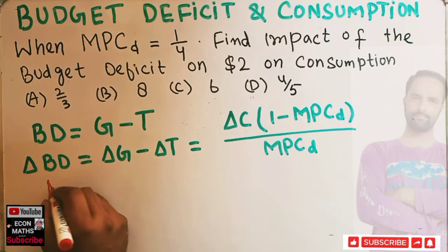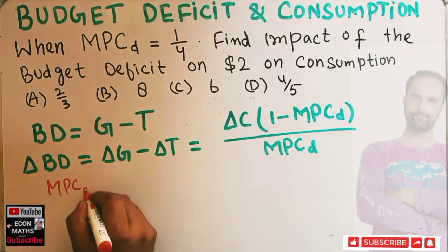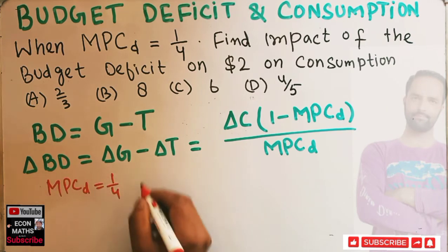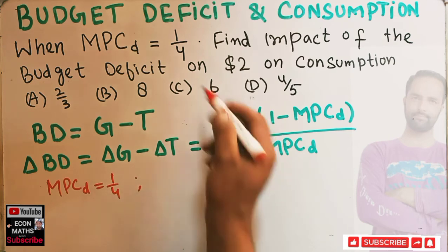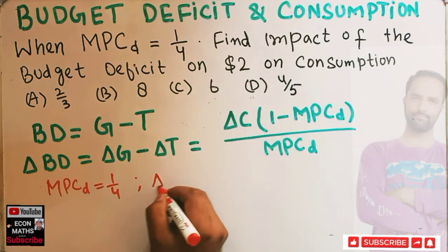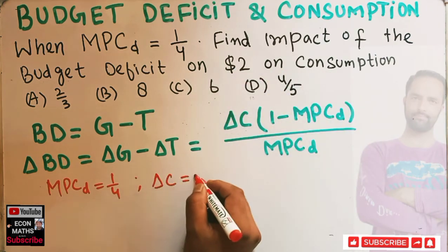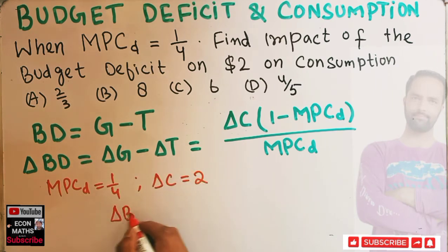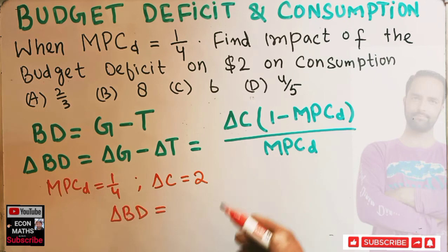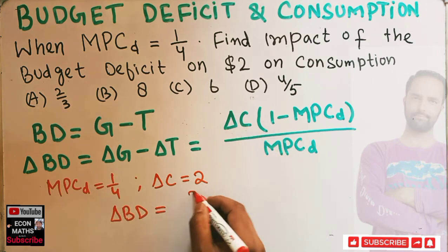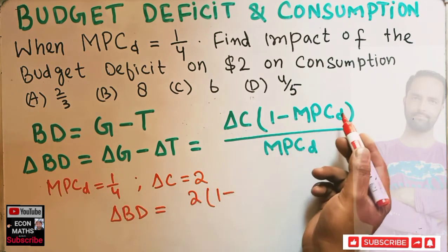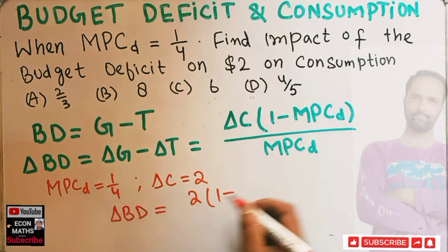We are given that marginal propensity to consume out of disposable income is one upon four, and consumption has changed by two dollars. So the change in budget deficit will be equal to: change in consumption is two, times (one minus MPCd which is one upon four), divided by MPCd which is one upon four.